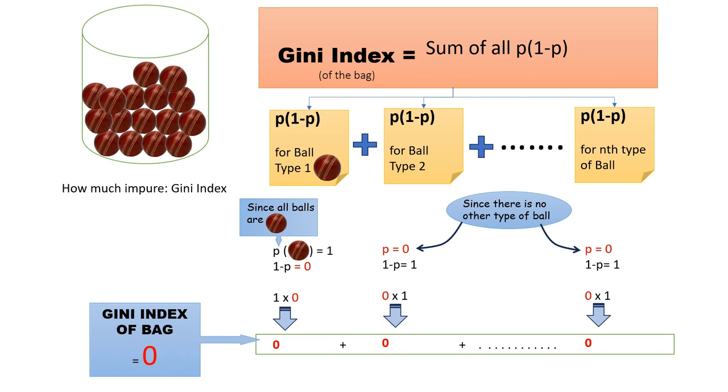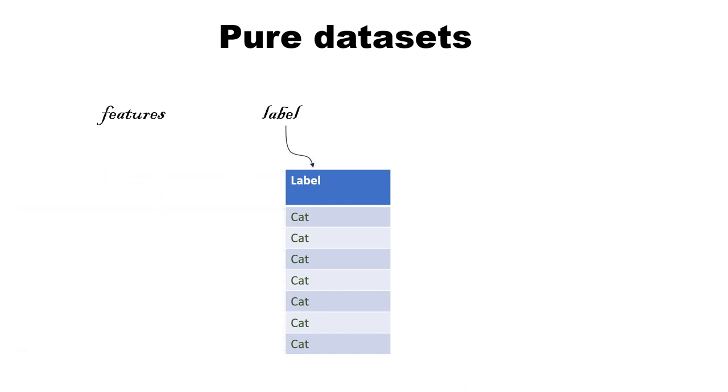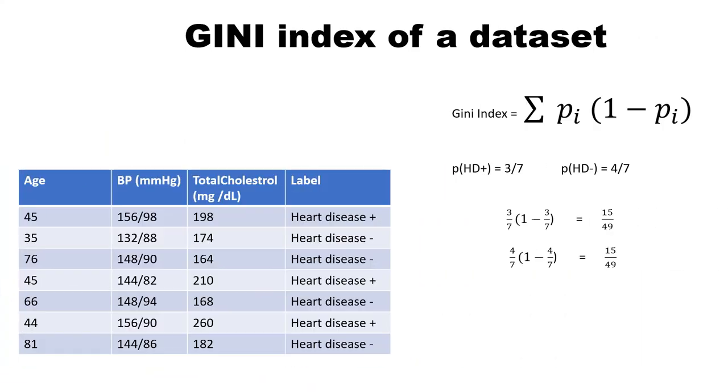You can similarly find Gini index of a dataset by looking at its labels. So if this is the dataset, we can see if there is only one class of item in the dataset, impurity or G is 0, just like we have seen before. If it is mixed, then we can calculate it by summation of p(1-p) for all the classes of labels.